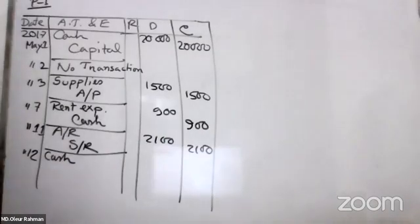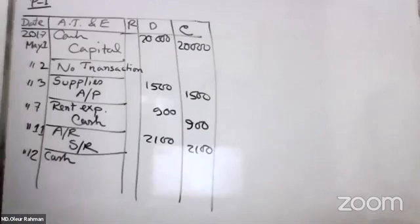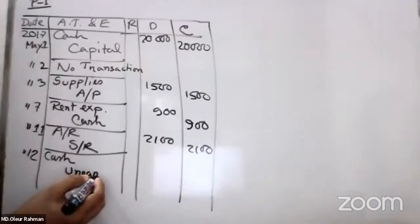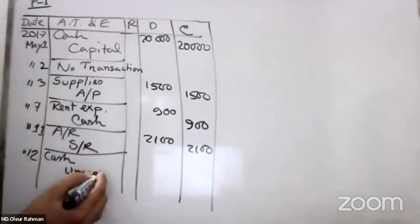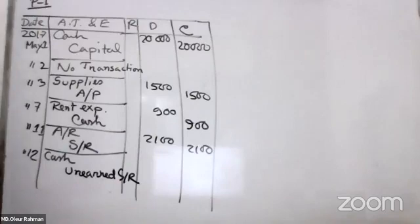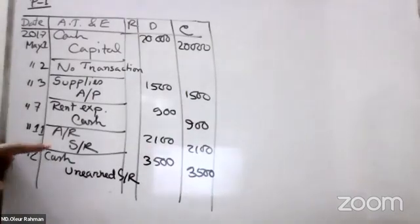Advanced Service Revenue and Earned Service Revenue — these are the relevant revenue accounts to recognize here.